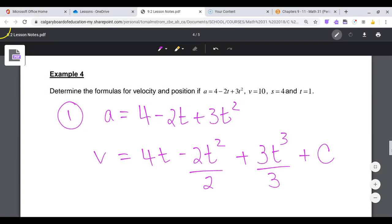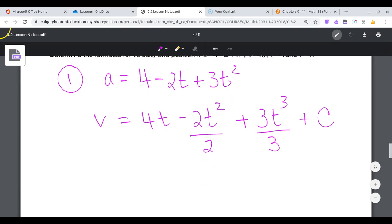Then I will tidy this up. So this is equal to, v is equal to 4t minus t squared plus t cubed plus c.